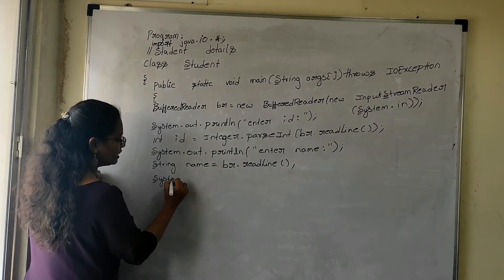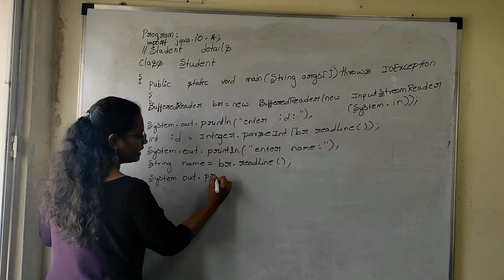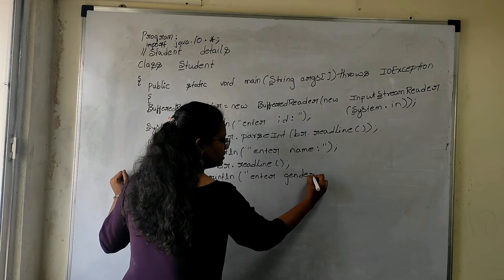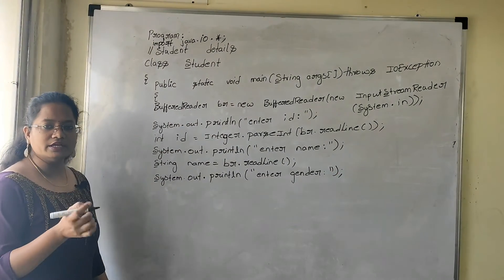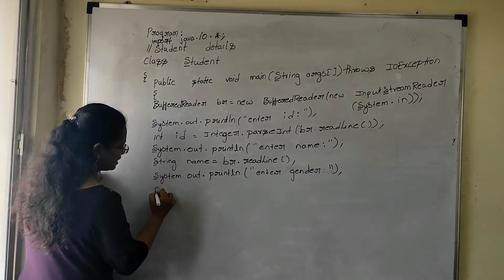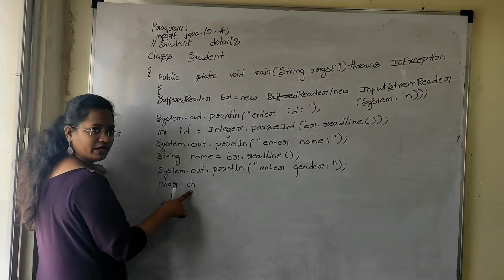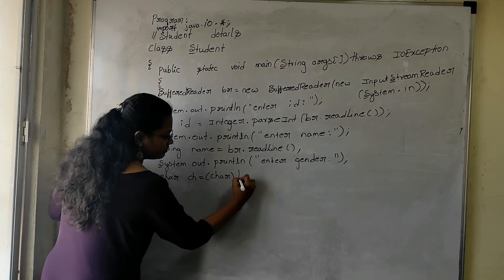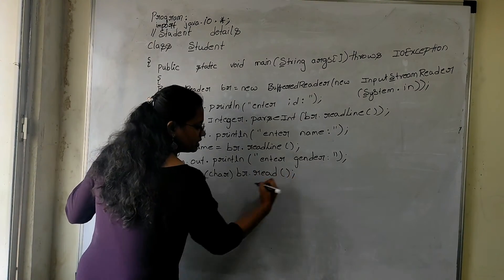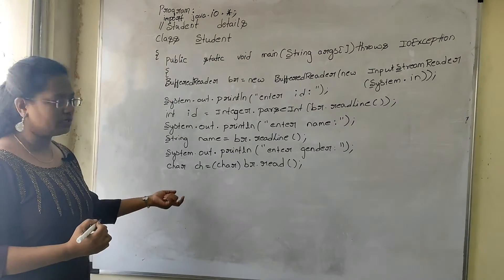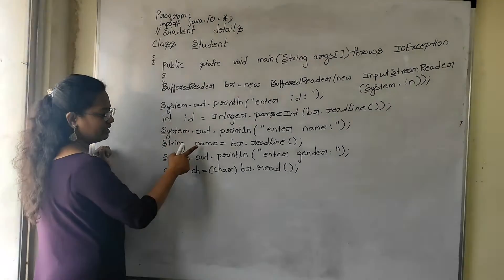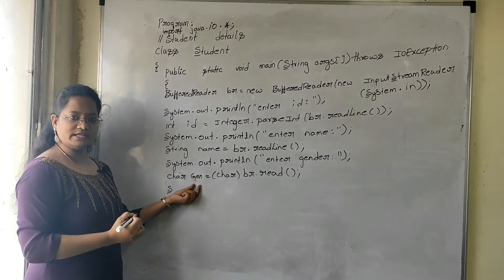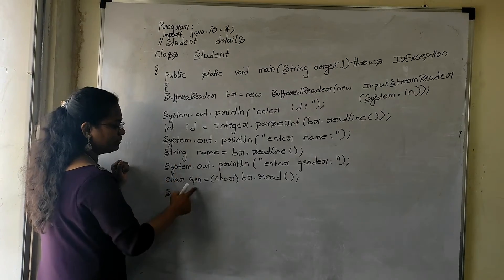Next, I want to take student gender. System.out.println("Enter Gender"). Gender is a character type of data — either male or female, M or F. So: char gen = (char) br.read(). By using this read() method, you are accepting a character from the keyboard. Now I want to print ID, name, and gender onto the console screen.